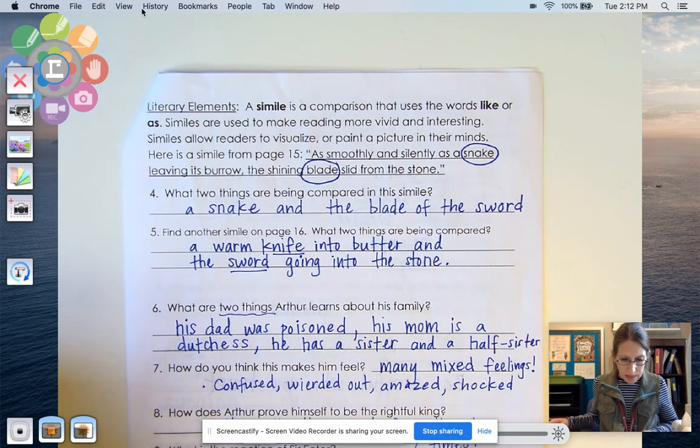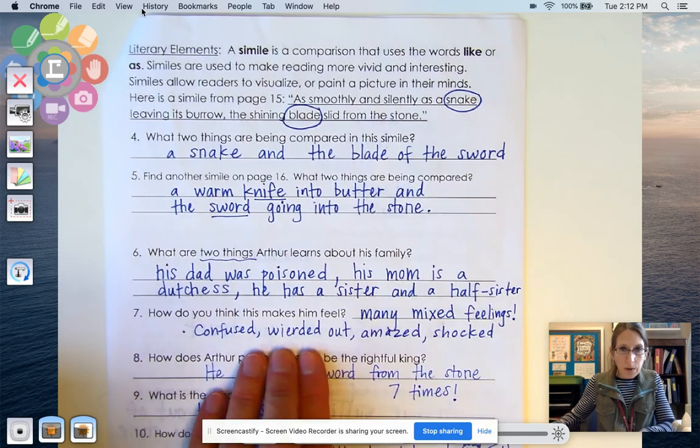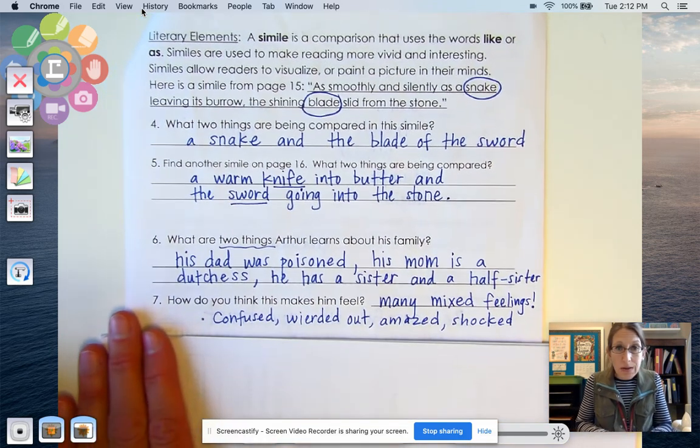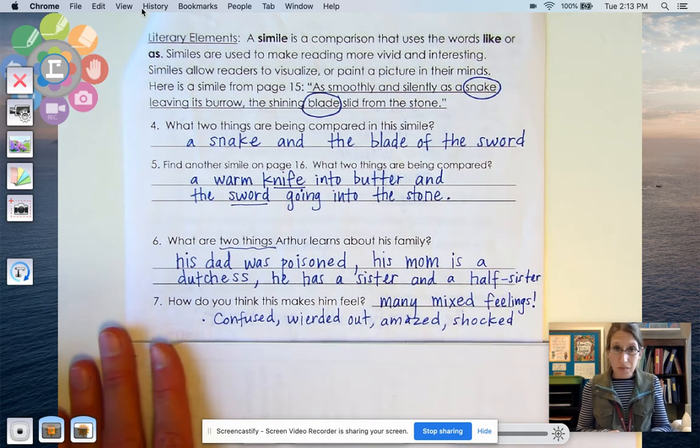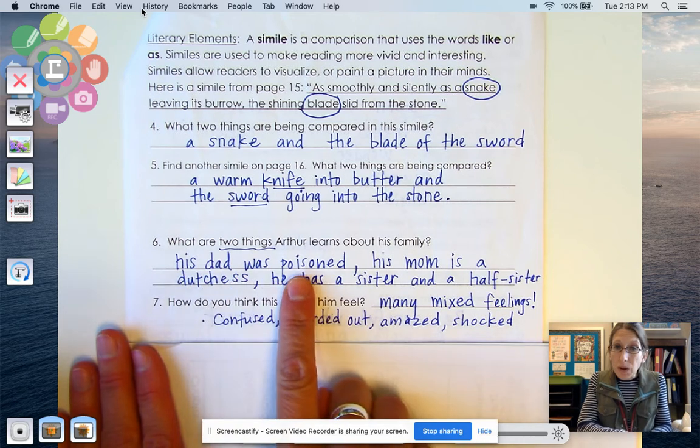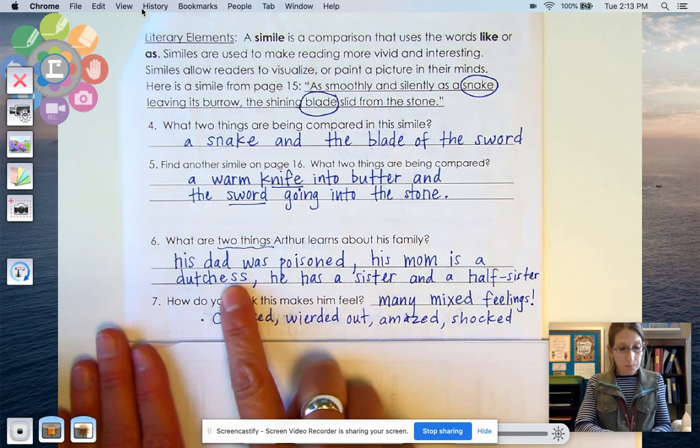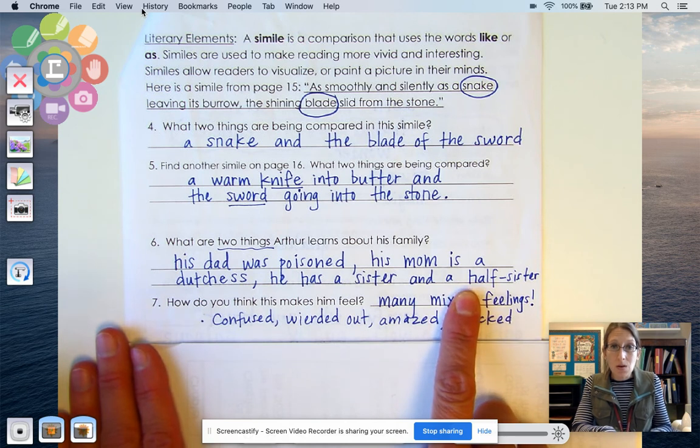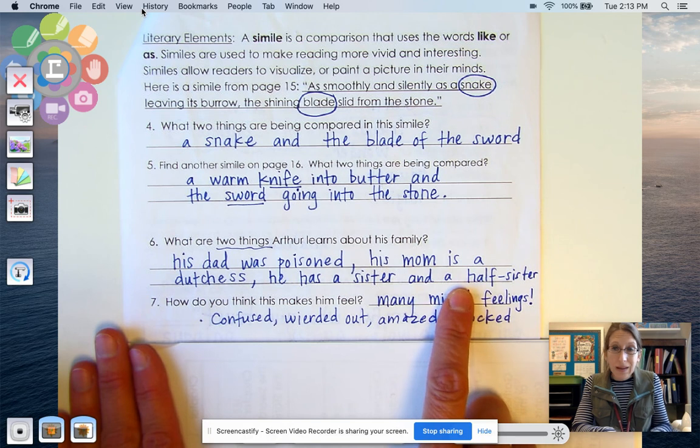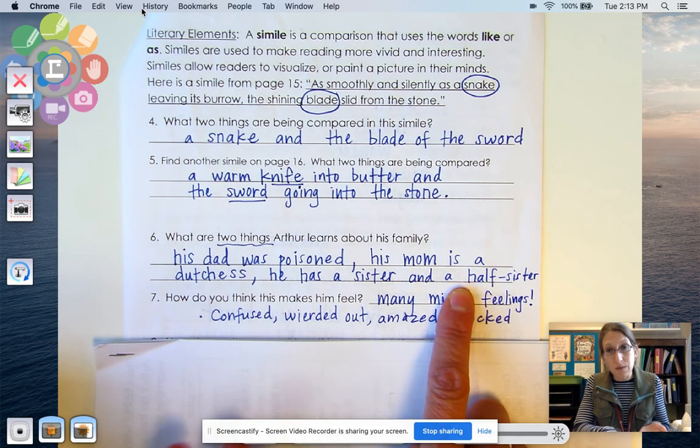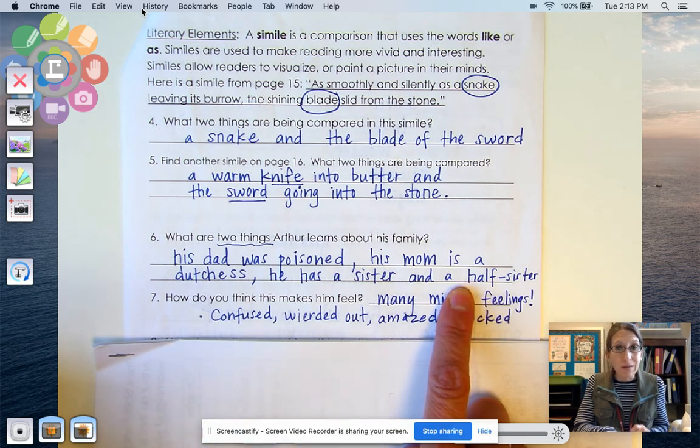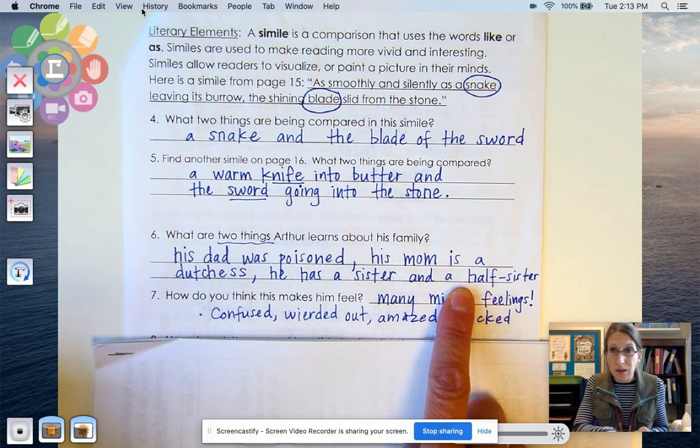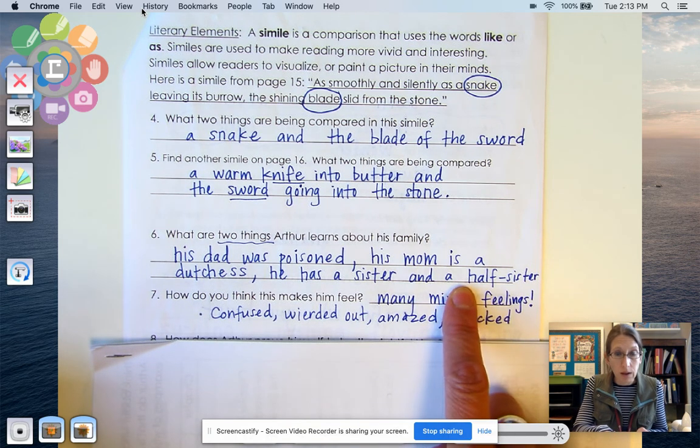All right. And let's see. I think we had a couple more questions we were working on. I think number six and number seven. And then we paused, didn't we? Okay. So for number six, it says, what are two things Arthur learns about his family? Oh, Arthur learns a lot about his family. He learns that his dad was poisoned. My goodness. That his mom is a duchess. He has a sister and a half sister. Wow. That's a lot to learn about your family. And he also learns that Kay and Sir Ector are not like his real family. They're his foster family. Kind of like taking care of him. But Ector is not his real father. His biological father. And Kay is not really his brother. Can you imagine finding that out? My goodness. That would be very shocking.